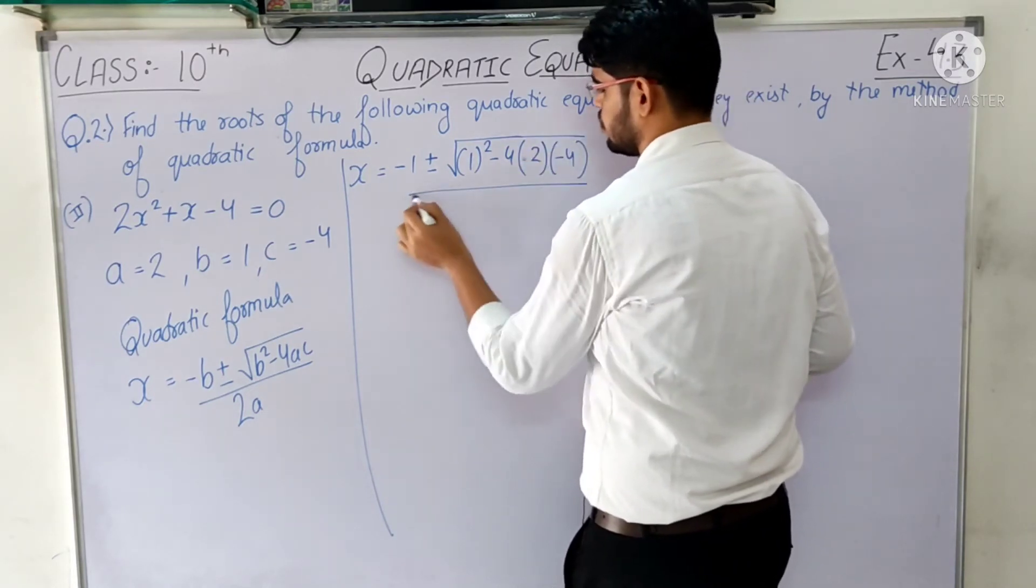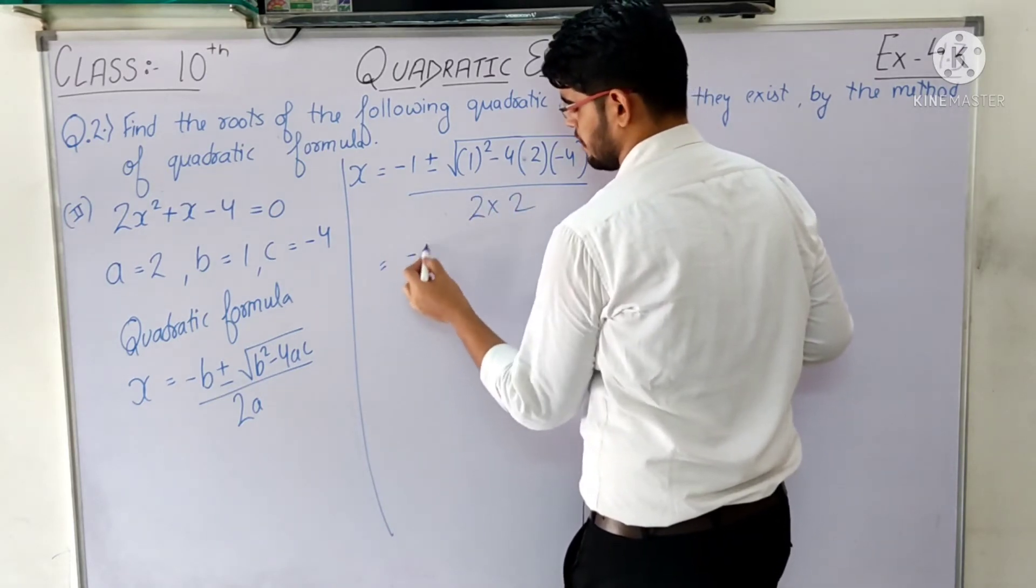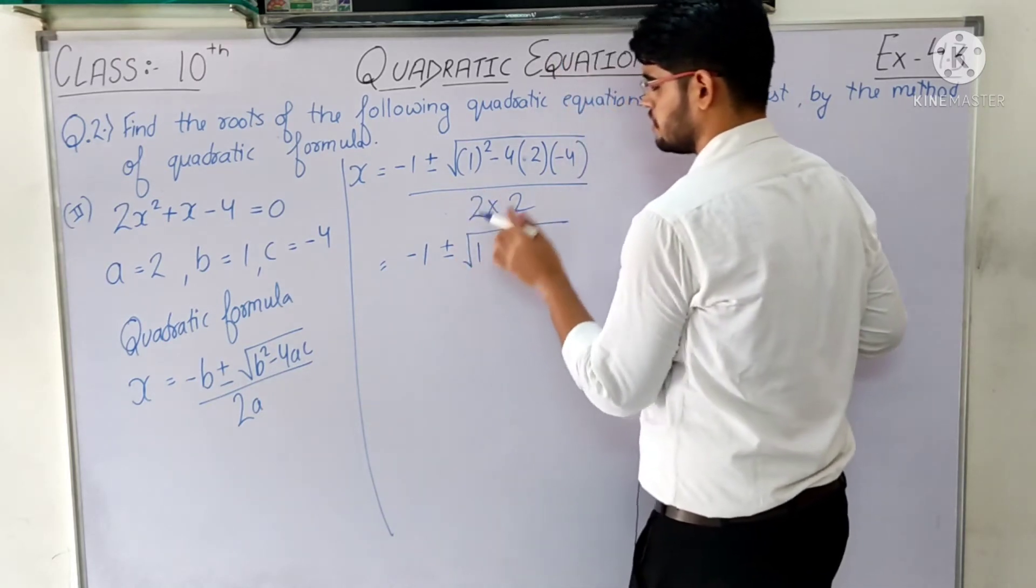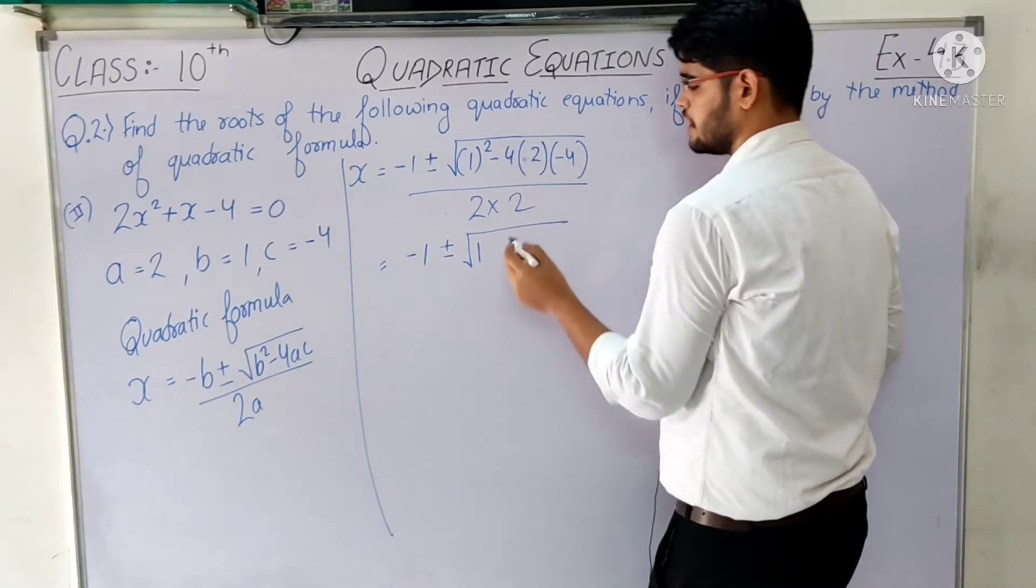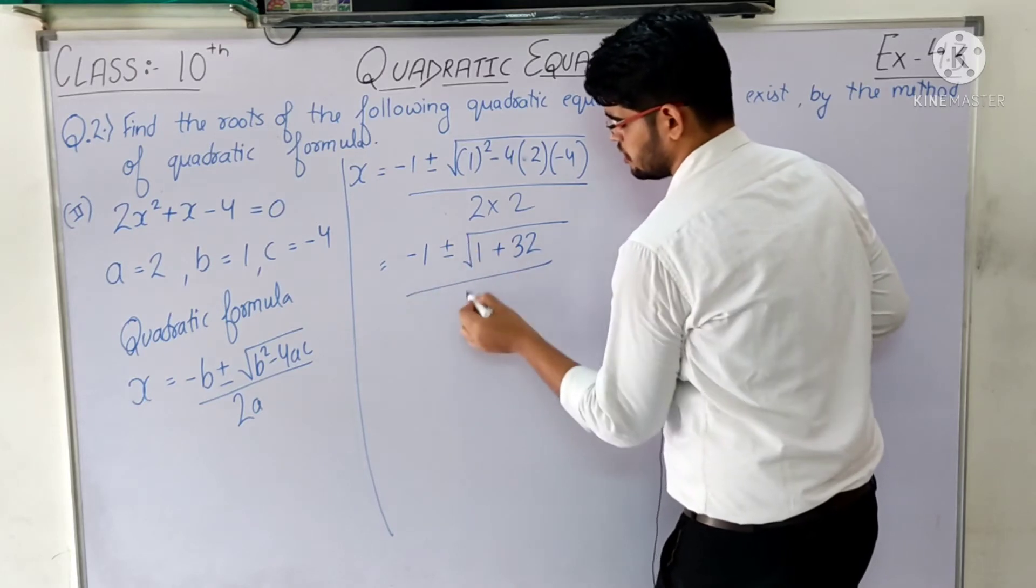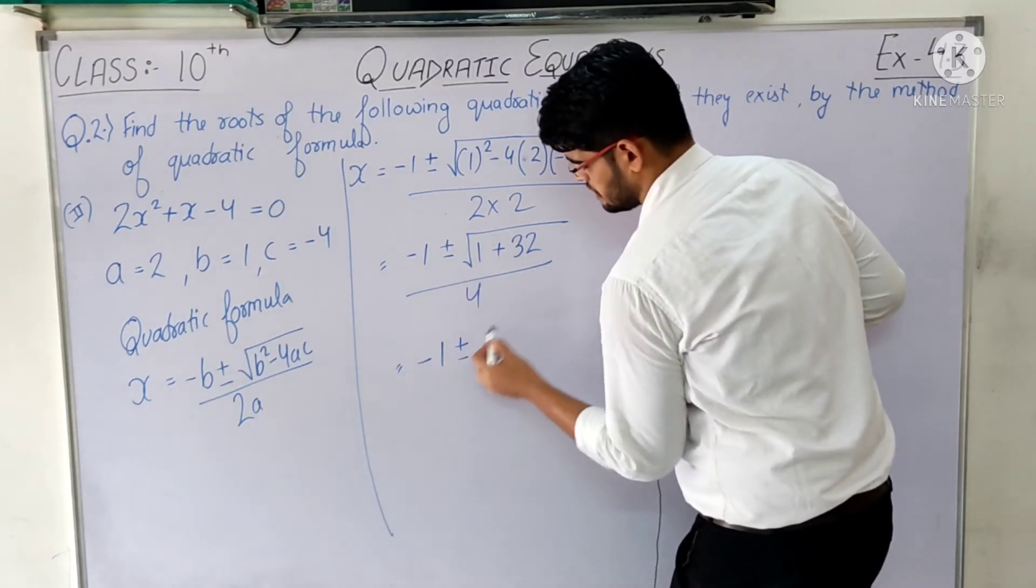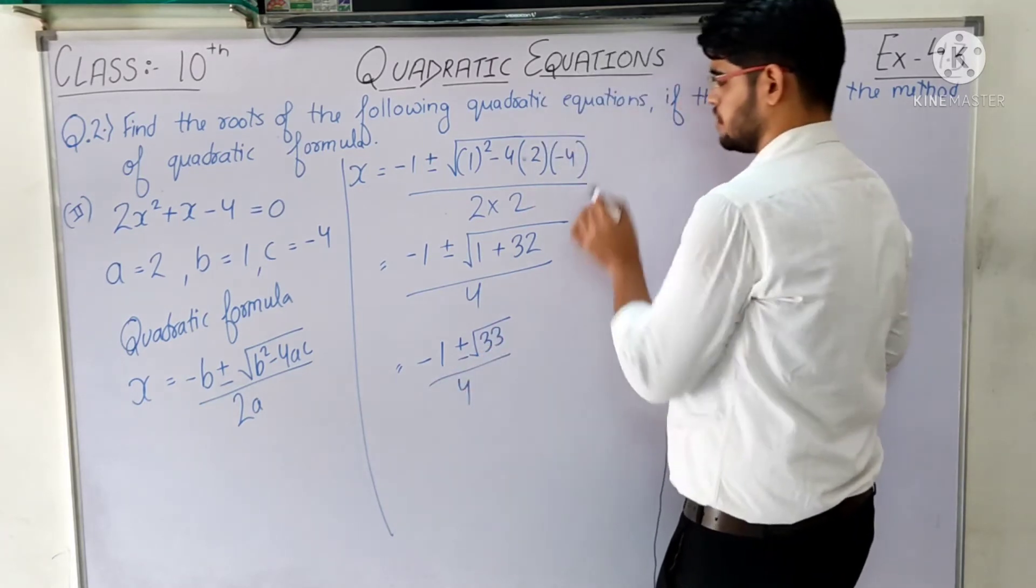Upon 2a, so 2 × 2. This is -1 ± √(1 - 4 × 2 × (-4)). Negative times negative is plus, so 4 × 8 = 32, giving us +32. This is -1 ± √33 / 4. So x has two values.